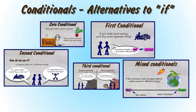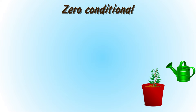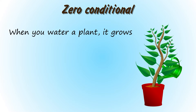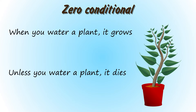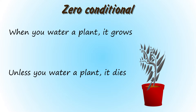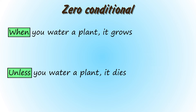Let's start by looking at some examples in the zero conditional. When you water a plant, it grows. Unless you water a plant, it dies. When and unless can be used as alternatives to if and if not. The meaning and emphasis are the same — it's just a different way to say it. When is interchangeable with if. It means exactly the same, but it's important to remember that unless means if not.